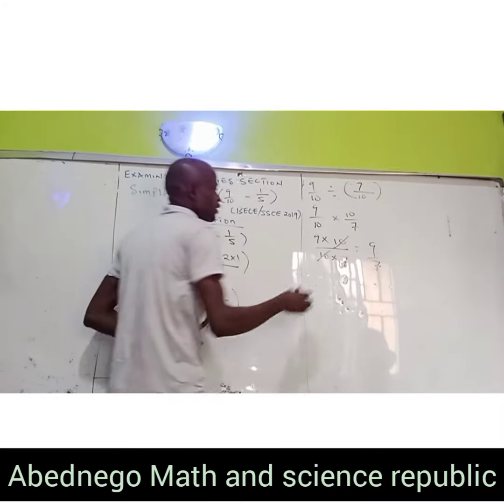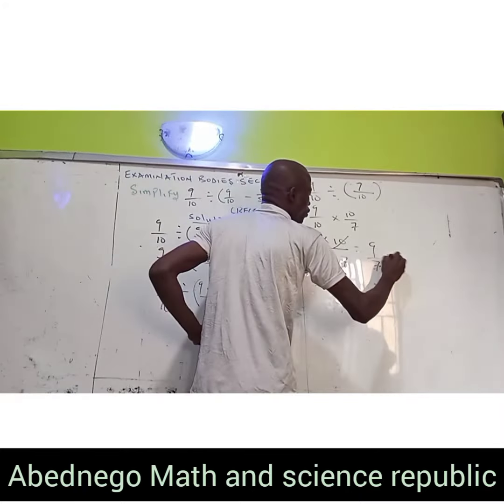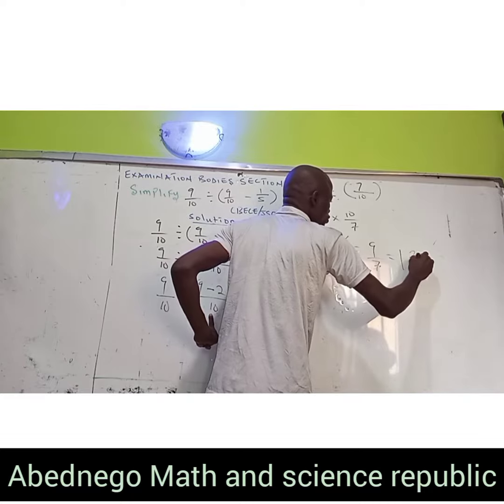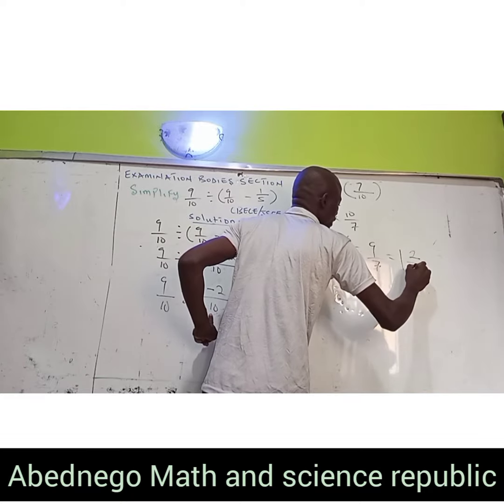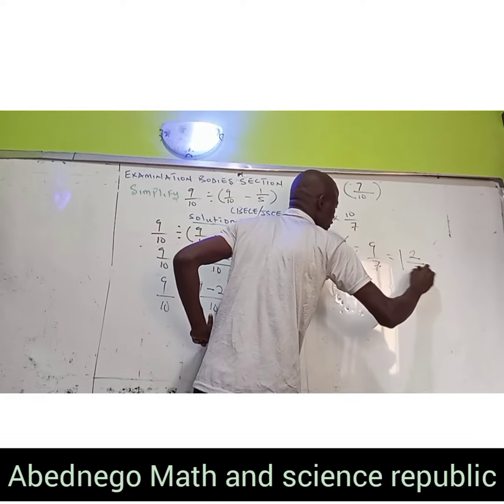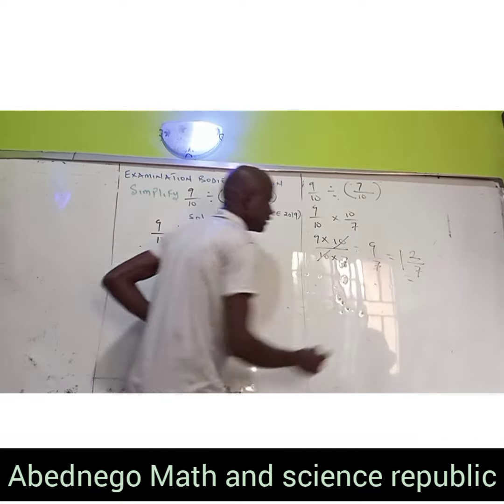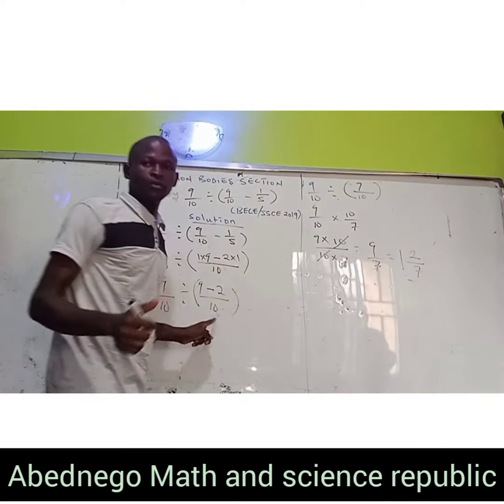What we're going to have finally is 9 divided by 7. And 9 divided by 7 can be converted to the mixed number 1 and 2/7. That is the final answer. Thank you.